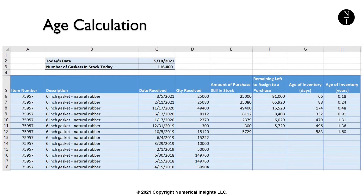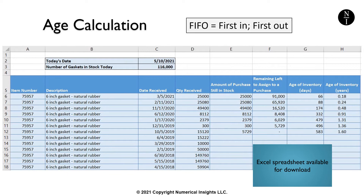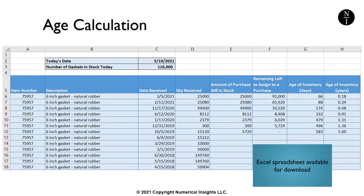Let's see how we can calculate the age of our inventory. I will assume here that we are using a FIFO system, which is the most popular choice for inventory management. If you're not familiar with the term FIFO, it stands for first in, first out. This means that the inventory that is used first for any item you carry is the inventory that first arrived in storage — your oldest inventory.